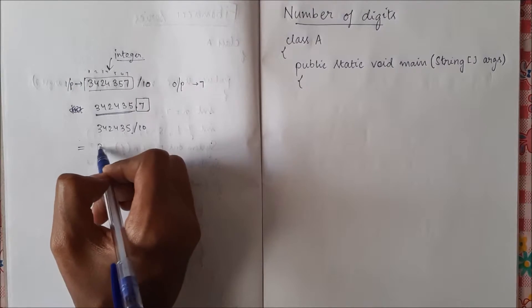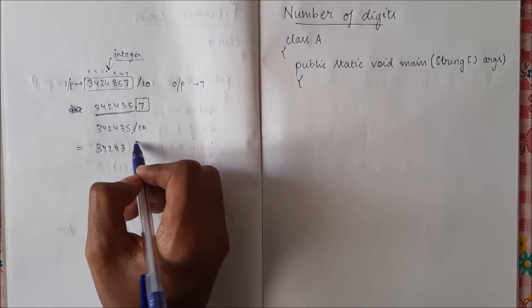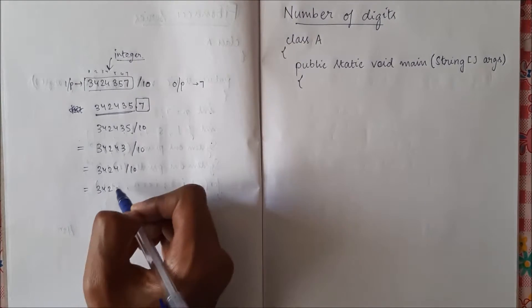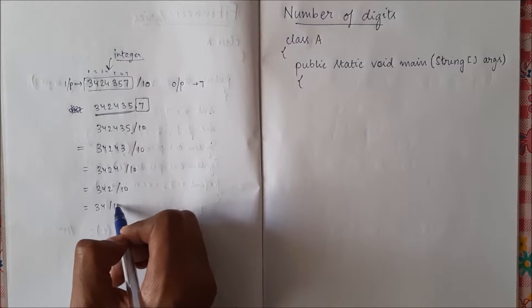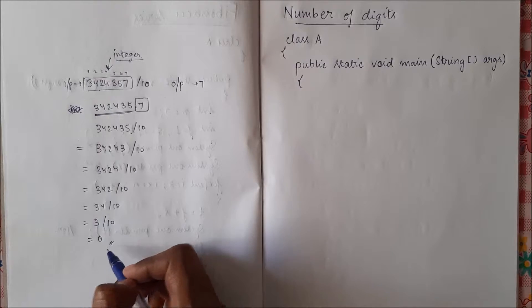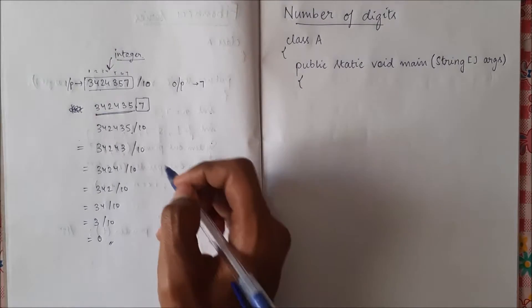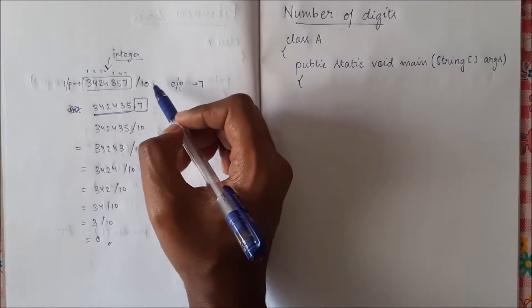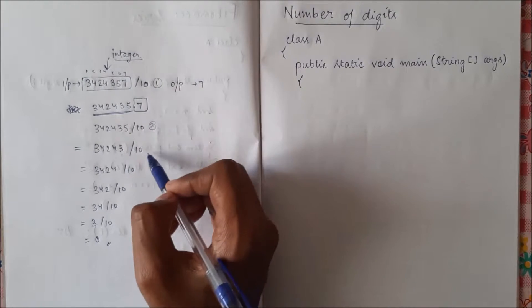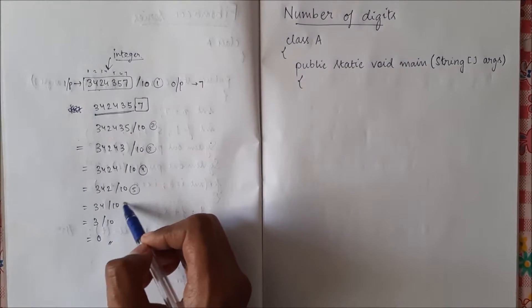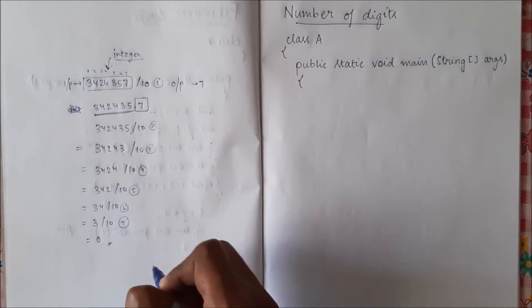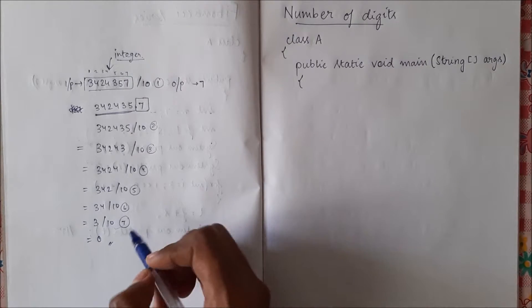So our output will be this if we divide by 10. Next time when we divide this number by 10 it will result in, again you divide it by 10 it will become 342. In this way we have to keep on dividing until we get 0. So once we get 0 we have to stop our loop. We can see the count as the number of times we have to divide it by 10: 1, 2, 3, 4, 5, 6, 7. So we were able to divide the number by 10 seven number of times, so our output is 7.